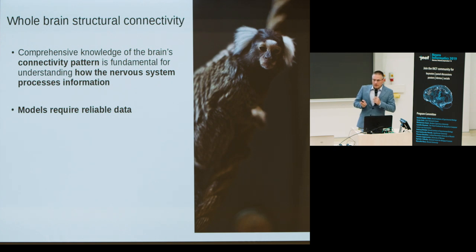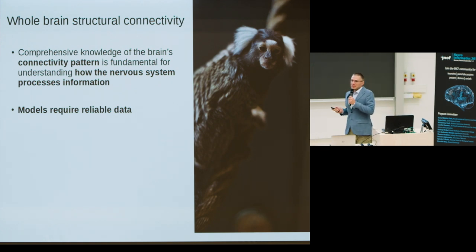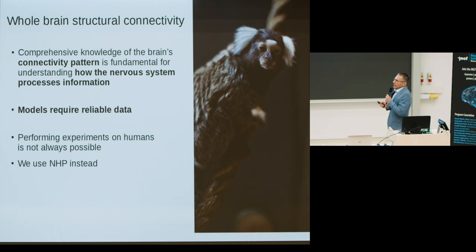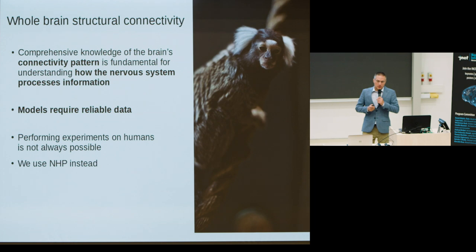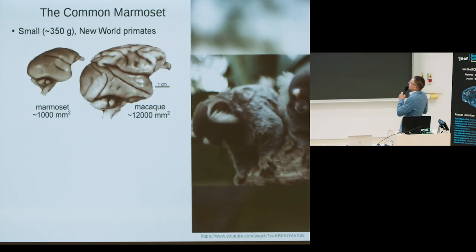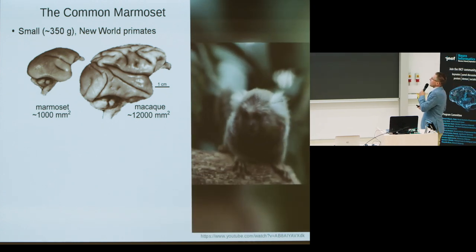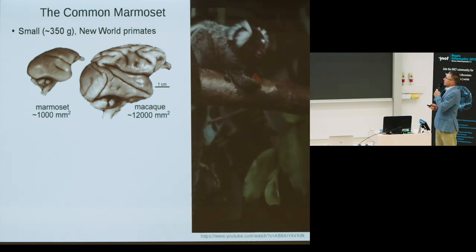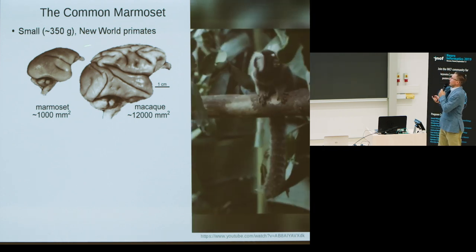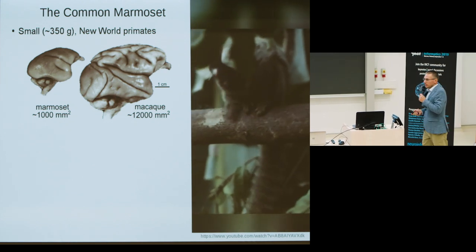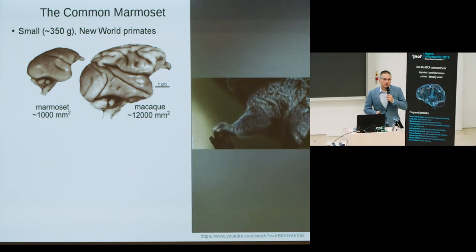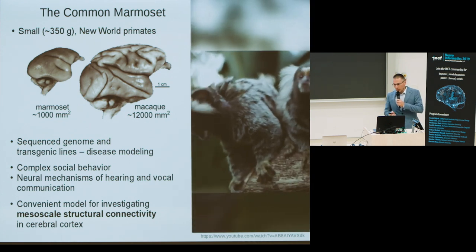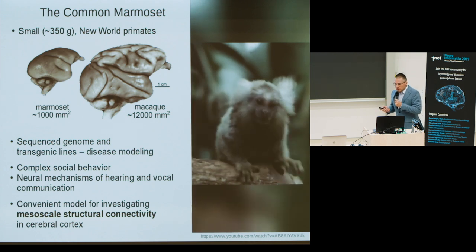Therefore, we fall back to animal models such as mouse or non-human primates, and among them the common marmoset. Common marmosets are New World primates and they are relatively small, as are their brains. The surface of the marmoset cortex is approximately 12 times smaller in comparison with macaque. Nonetheless, the marmoset brain preserves all the defining features of the primate brain, and marmosets have become increasingly popular and extremely useful animal models.